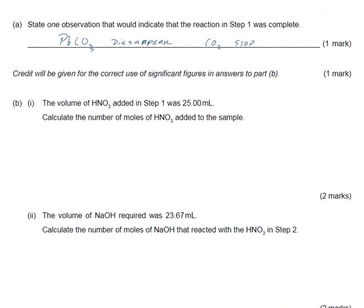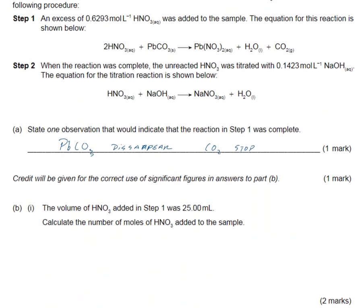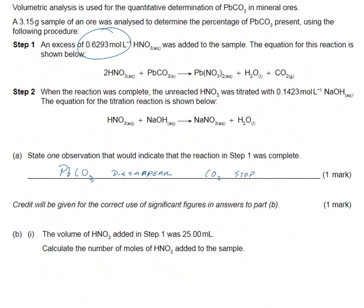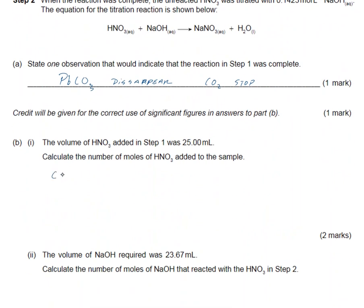Now, the volume of nitric acid added in step one was 25 mL. Calculate the number of moles of nitric acid. If you go back to the question it tells you the concentration. C equals n over V, so rearranging, n equals C times V. So n equals 0.6293 times 25 mL.